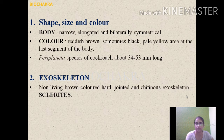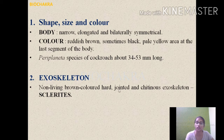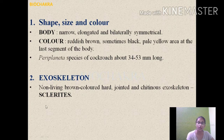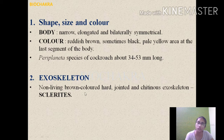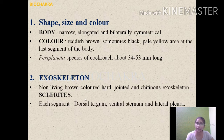The exoskeleton is composed of various plates which we call sclerites. This is an important point: the exoskeleton is non-living, brown colored, hard, and jointed — it is a chitinous exoskeleton made up of several plates called sclerites.